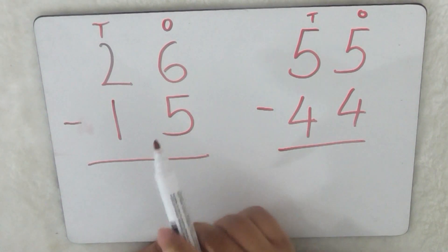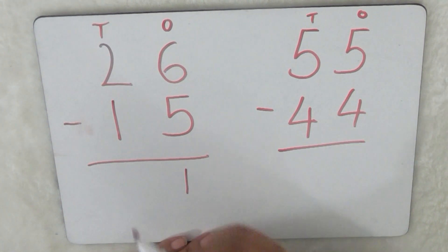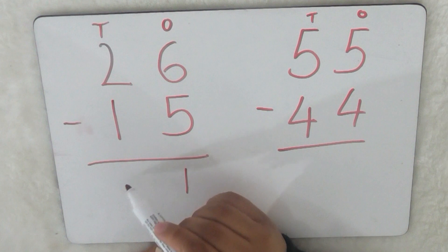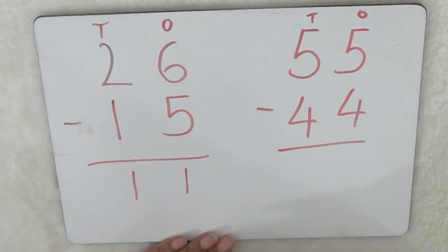So we're going to do this one first. What is six take away five? So I will have one left. I put a one there. What's two take away one? And that's one. So 26 take away 15 equals 11.